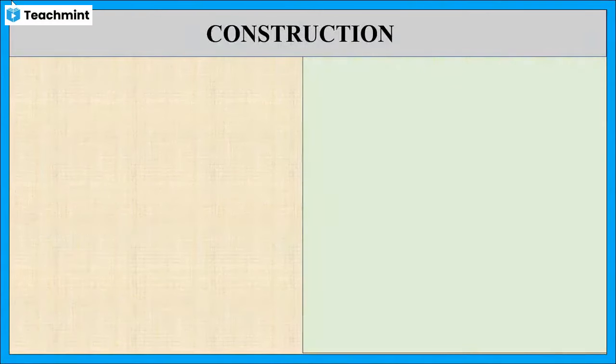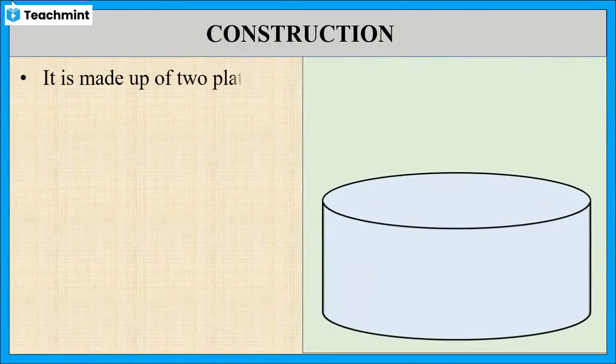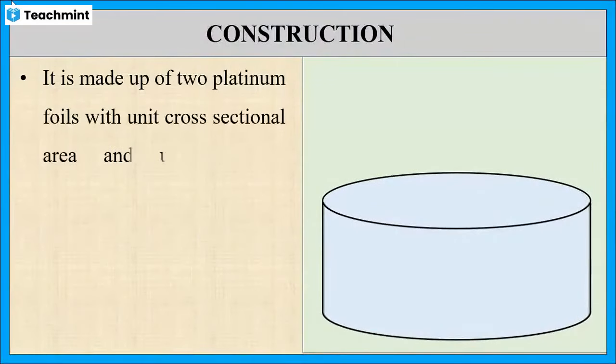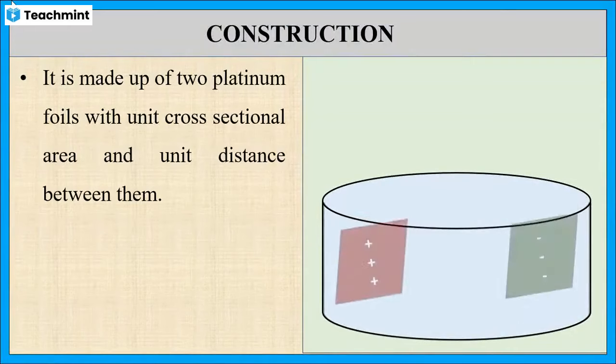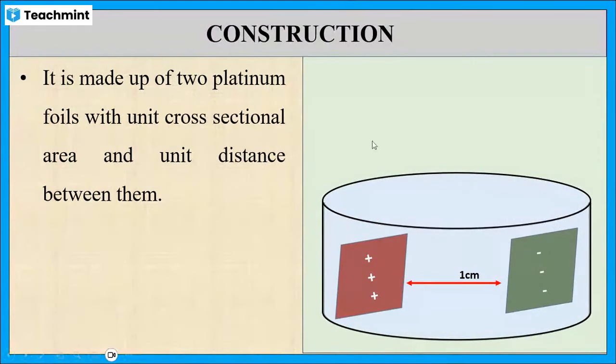Now let us see the construction. The transducer is a conductivity cell made up of two platinum foils with unit cross-sectional area and unit distance between them. The distance between the two foils is one centimeter.